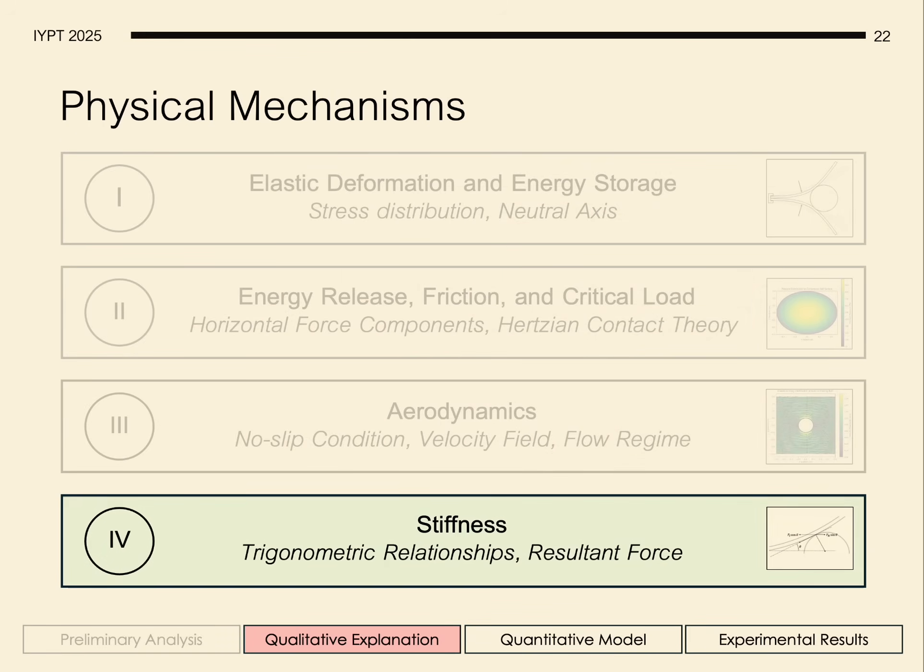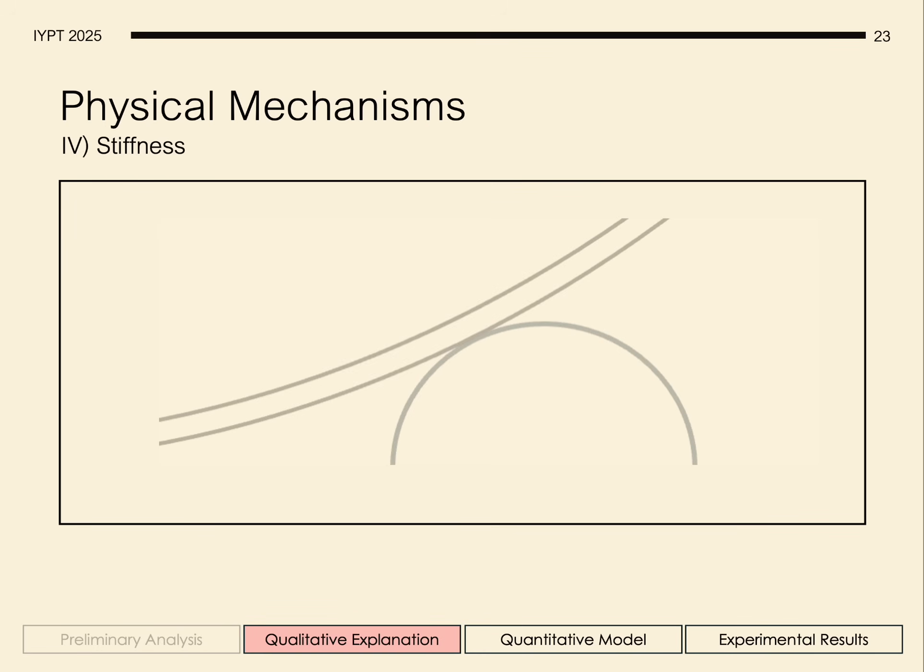And finally, discussing the stiffness. If theta is the angle between the horizontal axis and the tangent to the ball, we can express horizontal components of the forces with the following trigonometric relationships.